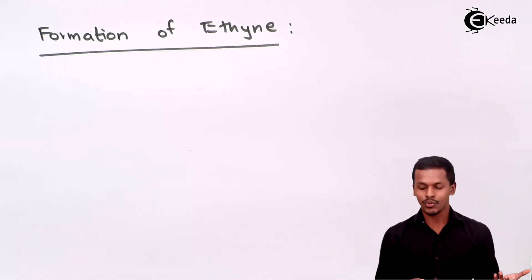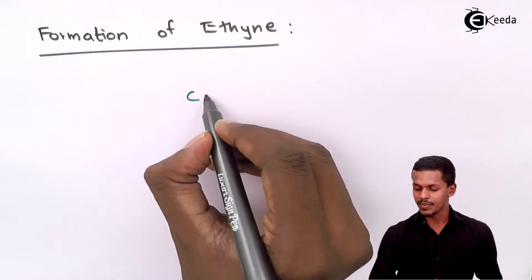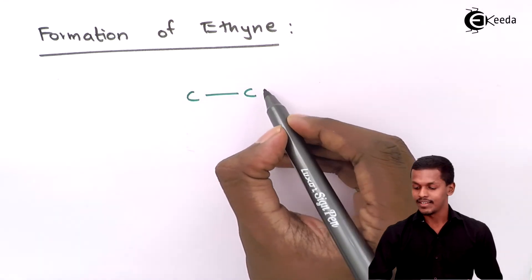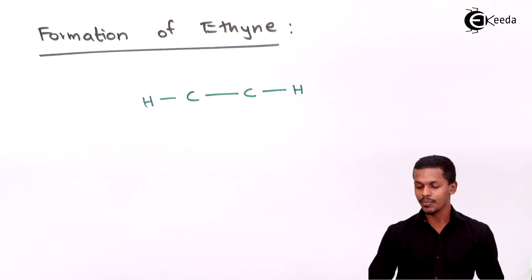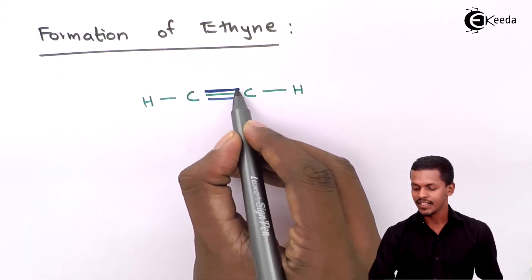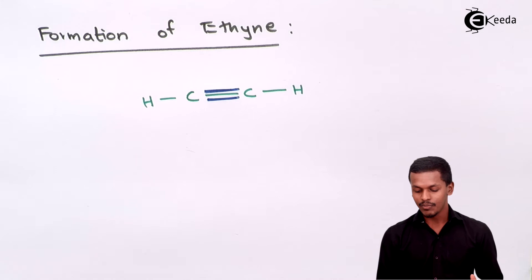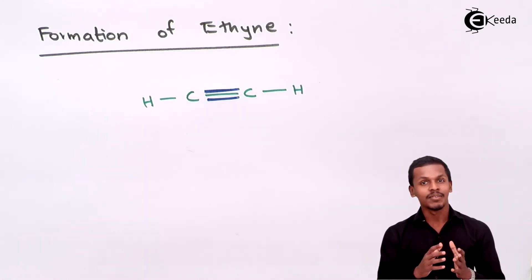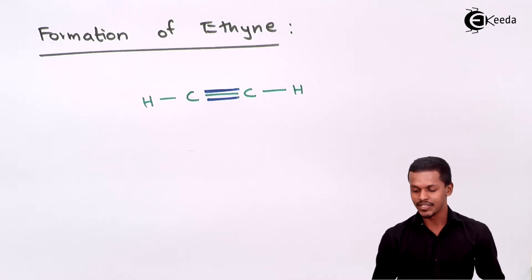We are going to talk about the formation of ethyne. The ethyne structure consists of 2 carbon atoms and 2 hydrogen atoms. It consists of basically 3 bonds between carbon and carbon. The blue lines shown here are the pi bonds, while the green bond is basically the sigma bond — shown differently just to indicate they are two different types of bonds.